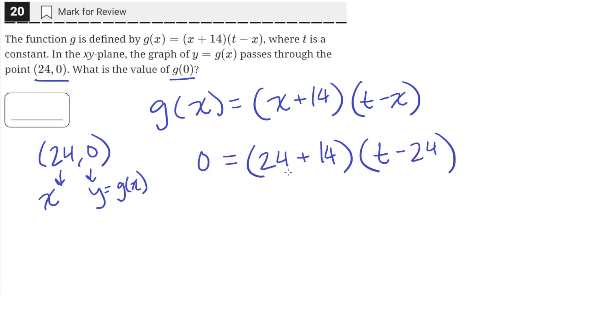We can simplify this to just 38 times t minus 24, and then we can distribute this 38 to both.